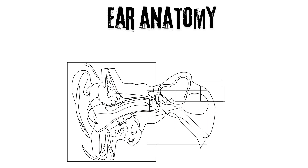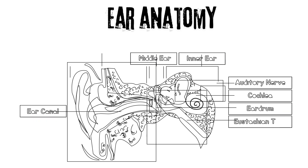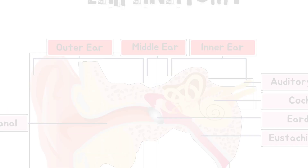The ear consists of three parts: outer ear, middle ear, and inner ear. Infections, inflammation, and other conditions affecting these areas can lead to pain.